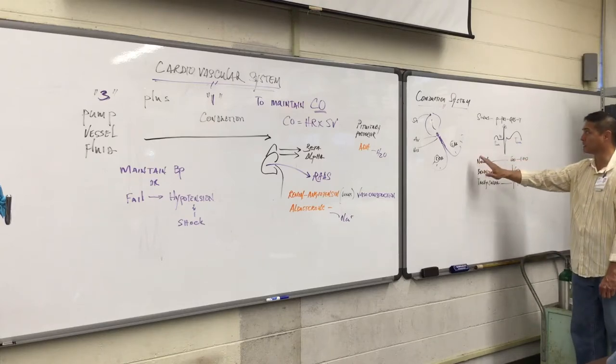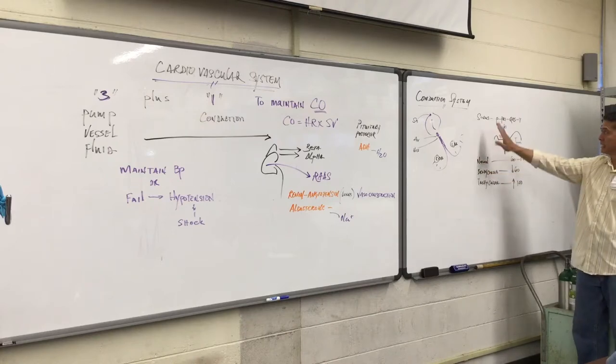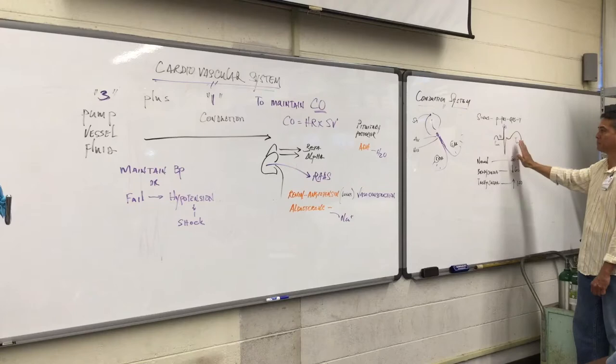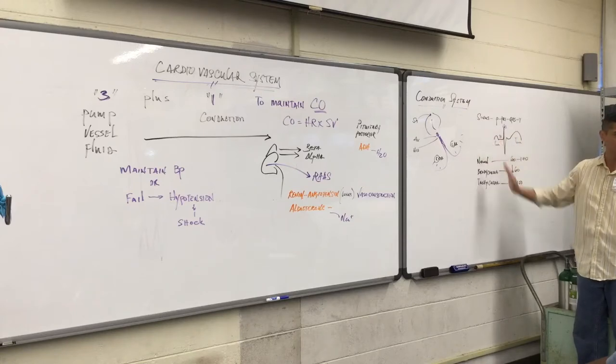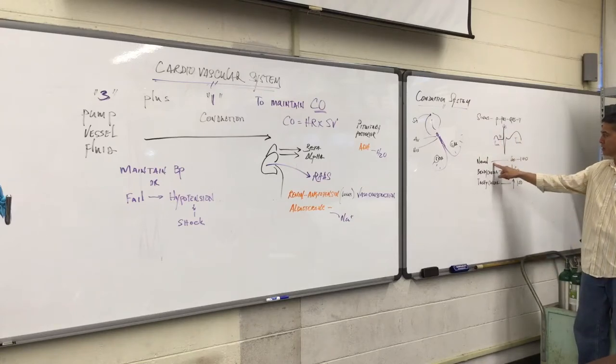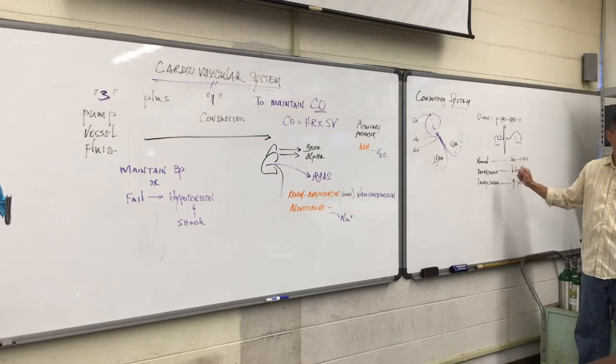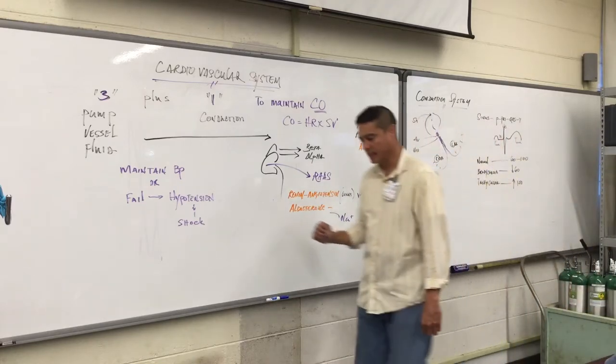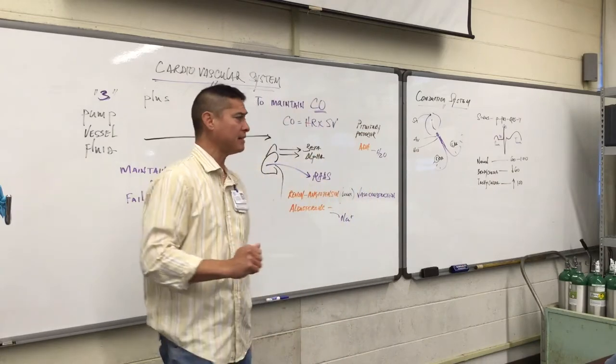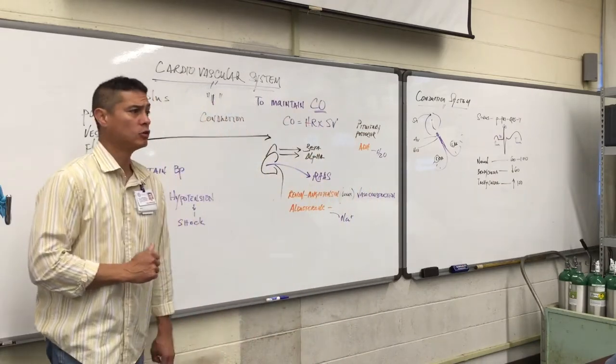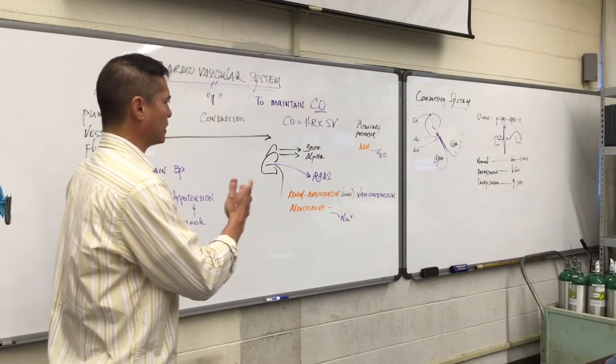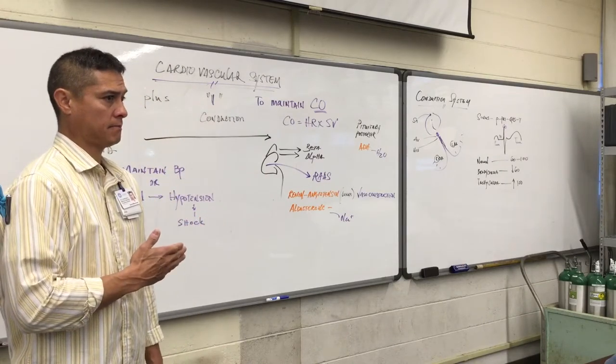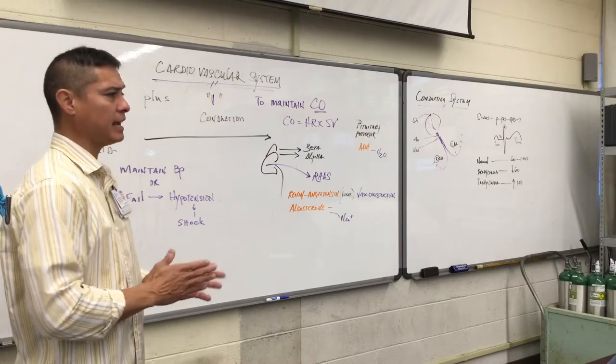To recap the sinus rates then, if we see a PQRST for every complex that's on the screen that we're seeing, all we need to now know is what rate this is. Between 60 and 100, we would consider that normal. If it's less than 60, 59, 58, 40, 30, 20, as long as it has a P wave, a QRS, and a T wave, where everything looks exactly the same, it's called sinus bradycardia.